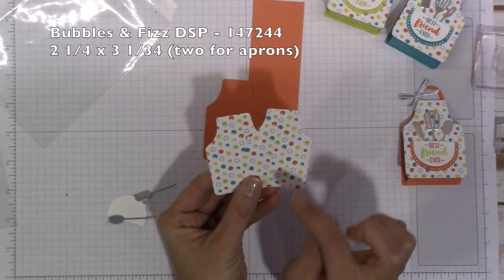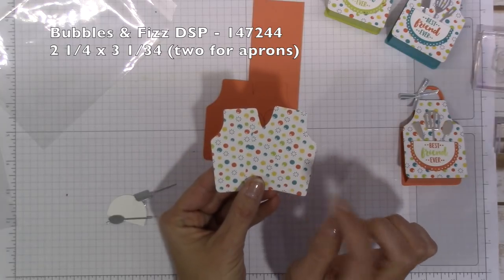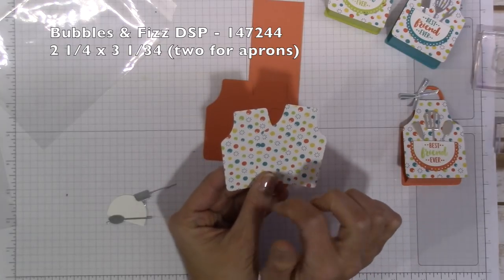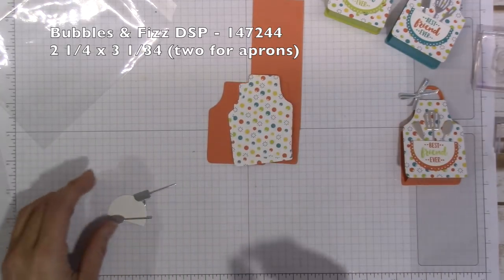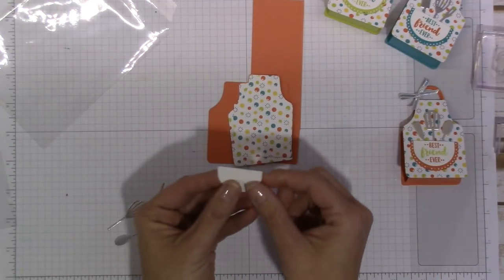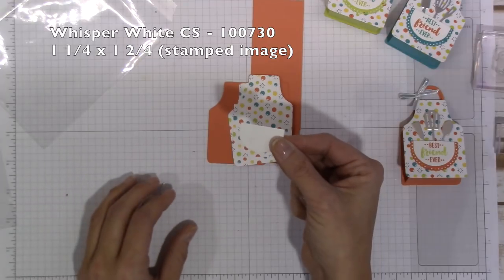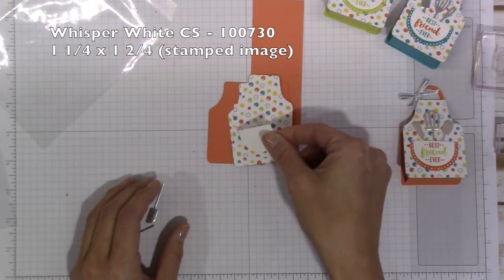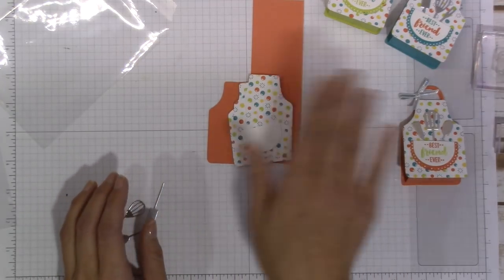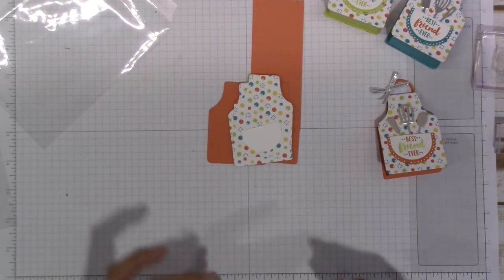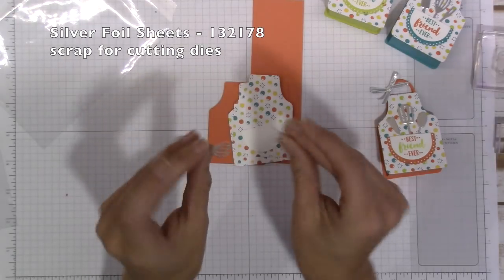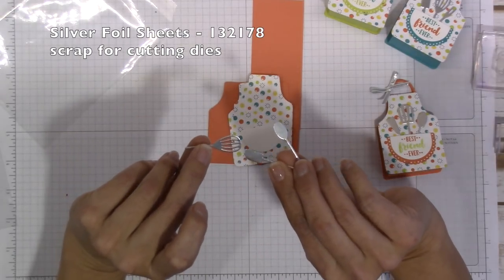Then you'll need two pieces of the Bubbles and Fizz DSP, which is what I use. So I still can't get enough of this stuff and I know you guys are going to get tired of it, but I like it. So two of those for the apron as well, and then a little piece of Whisper White cardstock to cut out the front part here. And then I used our silver foil paper to cut out these cute little spoons and spatulas.